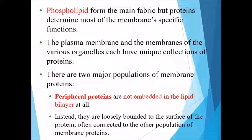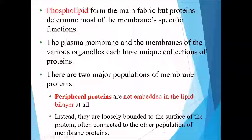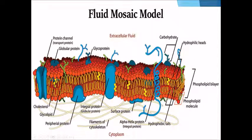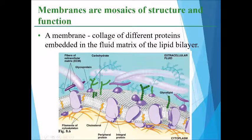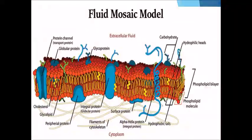The first type is peripheral proteins. Peripheral proteins are not embedded in the lipid bilayer; instead, they are loosely bound at the surface and are often connected to the other population of membrane proteins — integral proteins.